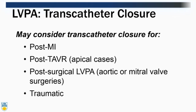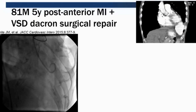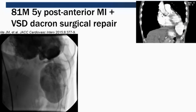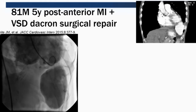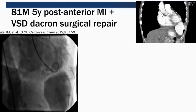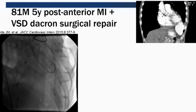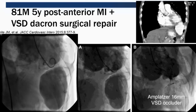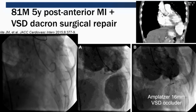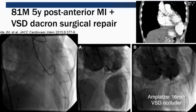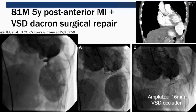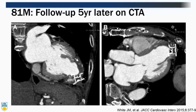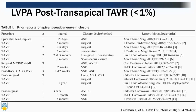Transcatheter closure can be considered for post-MI LV pseudoaneurysm, post-TAVR, post-surgery, and even traumatic cases. For example, an 81-year-old male, five years after an anterior infarct and VSD repair, had a massive ~20 cm pseudoaneurysm. It was closed percutaneously with an Amplatzer 16 mm VSD occluder, and five years later on CT the pseudoaneurysm sac was gone — a great outcome published two years ago.